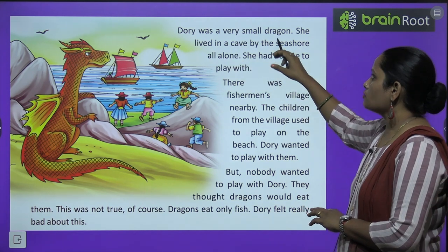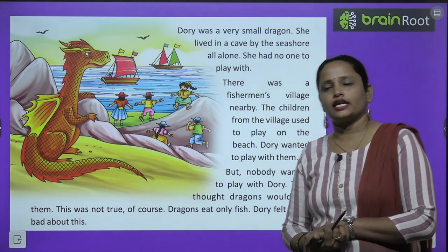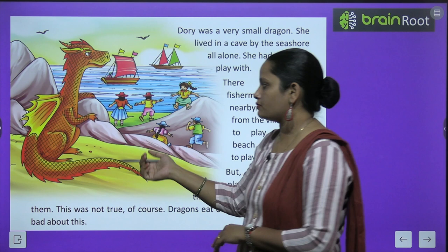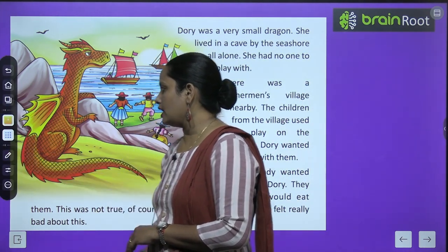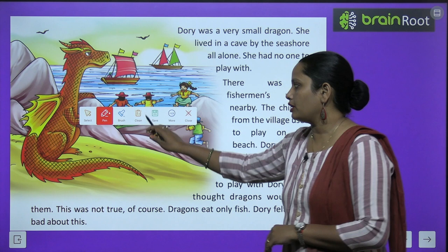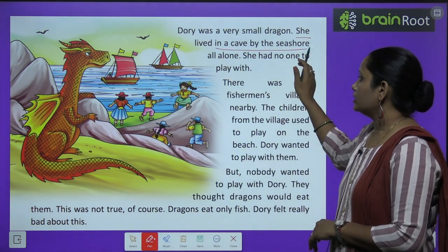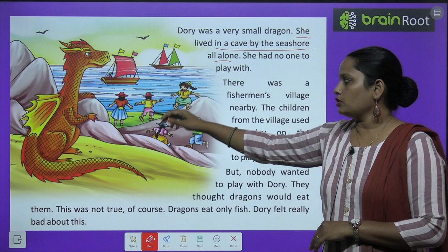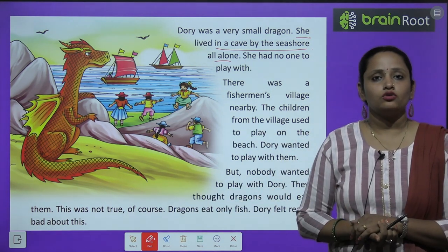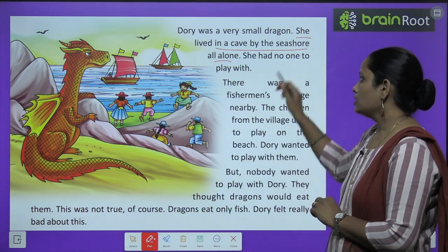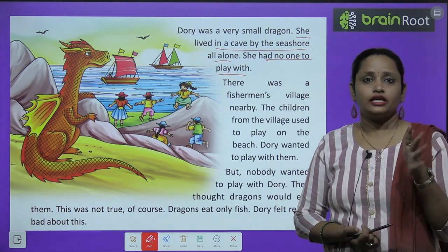Dory was a very small dragon. You can see Dory's picture in front of you — she was a small dragon. She lived in a cave by the seashore, all alone. She had no one to play with.